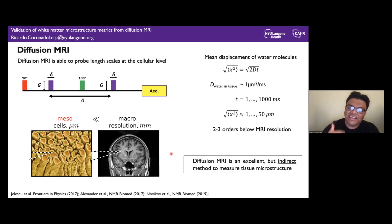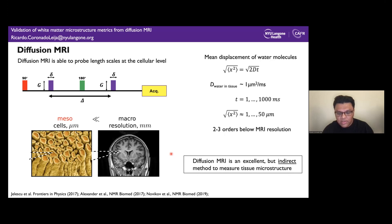Diffusion MRI is an excellent method for measuring tissue microstructure. However, it is still an indirect method, in the sense that we need to identify and extract the relevant information from the diffusion MRI signal.